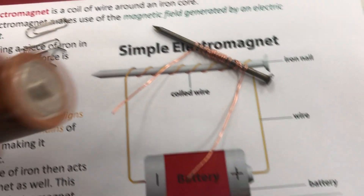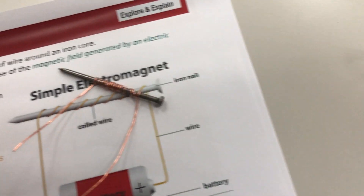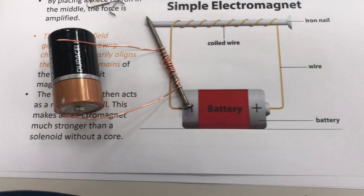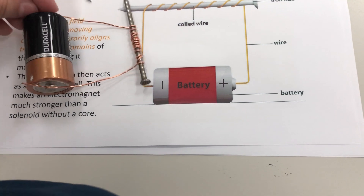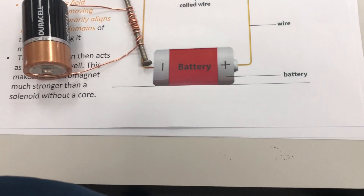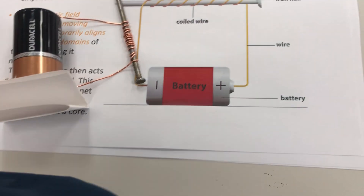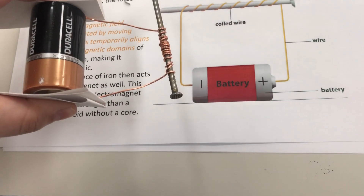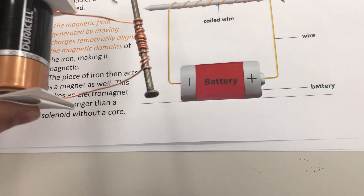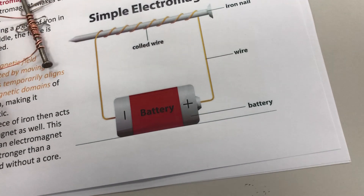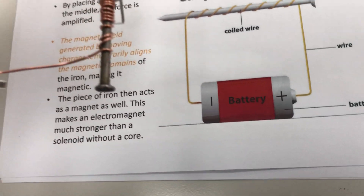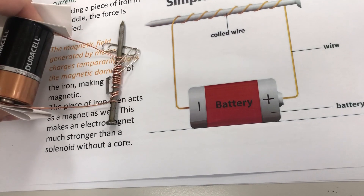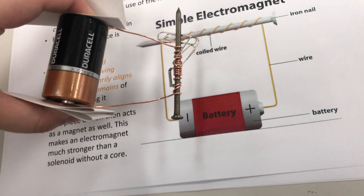We have some paper clips here and we're going to do this experiment. We'll put this here, put this there — and because it becomes hot I'm going to use these to pick it up. I have a battery and current flowing through these wires, which is creating a temporary magnet. Let's check if it works.